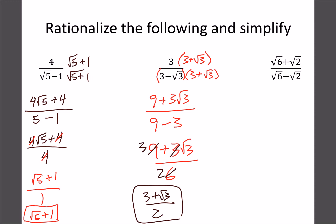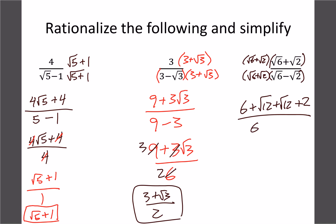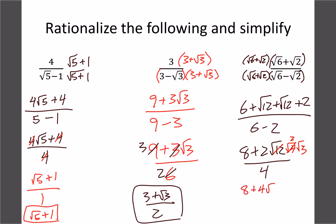The last example: the denominator is root 6 minus 2, so the conjugate is root 6 plus root 2. Foiling the top gives 6, two root 12 terms, and 2. On the bottom we get 6 minus 2 equals 4. Simplifying the top: 8 plus 2√12 over 4. Breaking down root 12 into root 4 times root 3, and root 4 is 2, giving 2 plus 4√3 over 4. Dividing out the 4 gives 2 plus root 3 as the final answer.